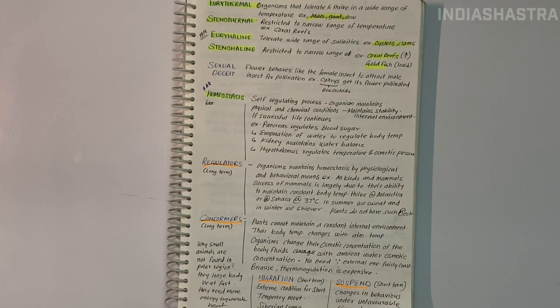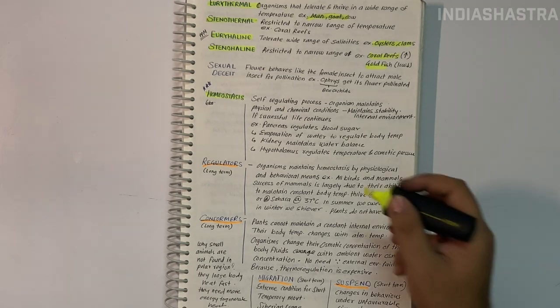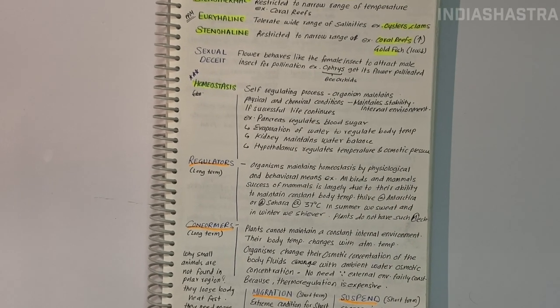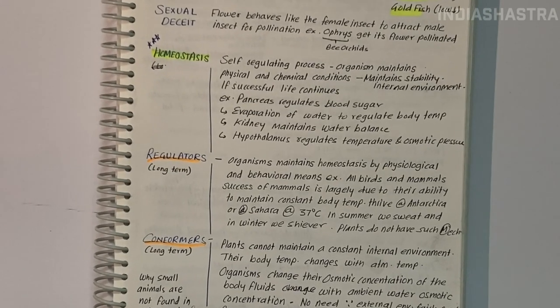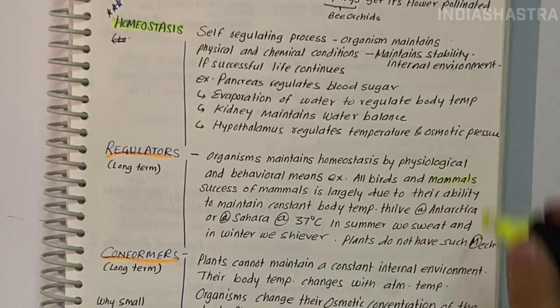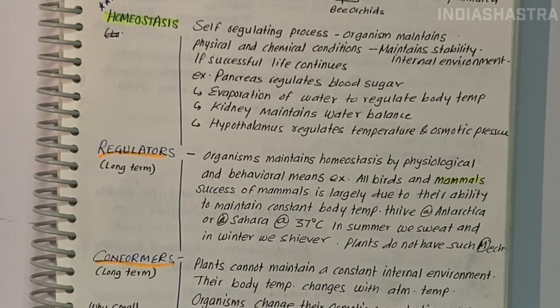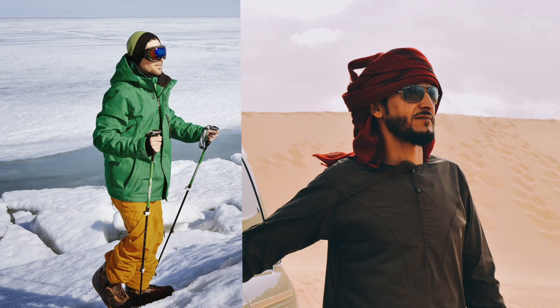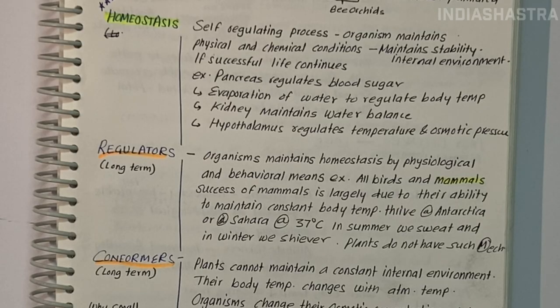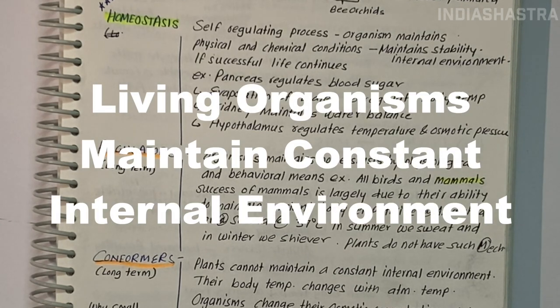Regulators maintain homeostasis by ensuring constant body temperature - thermoregulation - and constant osmotic concentration - osmoregulation. Mammals regulate temperature by shivering in cold and sweating in heat. Humans live in both polar regions and Sahara desert because they can maintain constant body temperature.